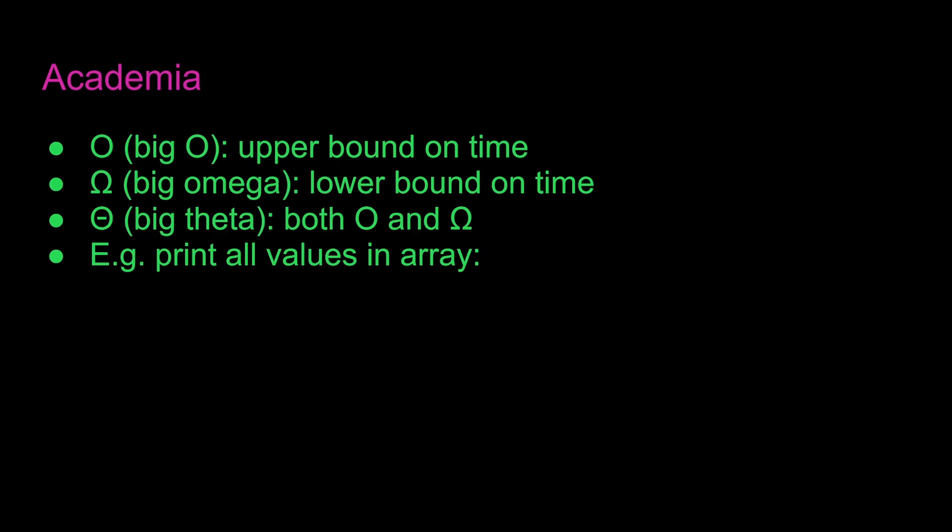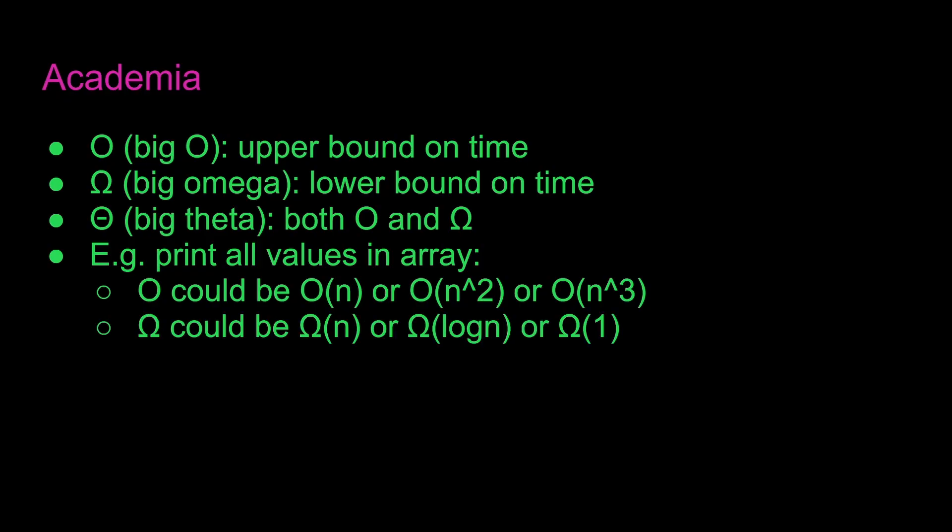So for example, if you're printing all values in an array, Big O could be O(n), O(n²), O(n³), etc. Big Omega could be Ω(n), Ω(log n), Ω(1), and Big Theta is just the intersection, Θ(n).